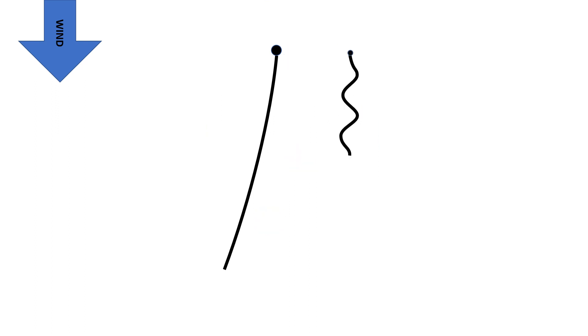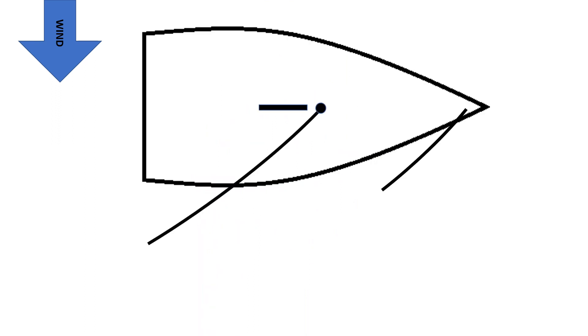If we oversheet the jib, we can close the jib slot so that the wind cannot get to the mainsail. We will create a lot of turbulence and lose power from both sails. If we undersheet the jib, we lose power, but also the boat will try turning into the wind, and it will feel really heavy on the rudder to keep the boat straight. This is because of how the sails interact with the hull.